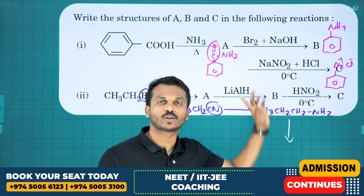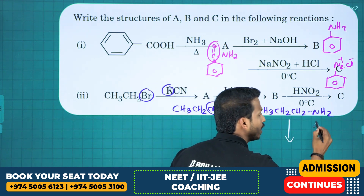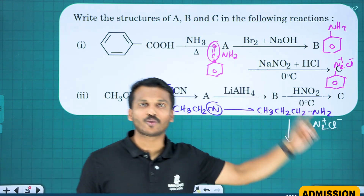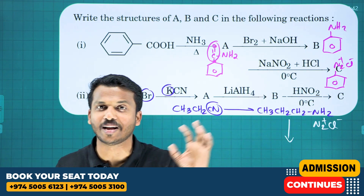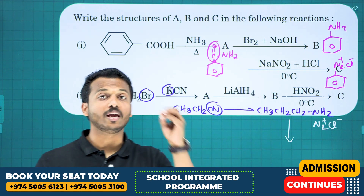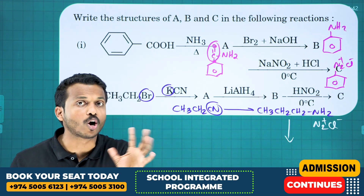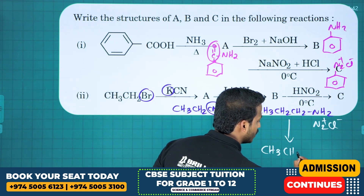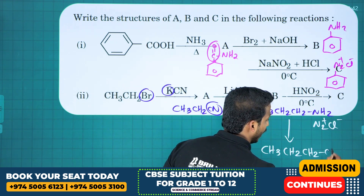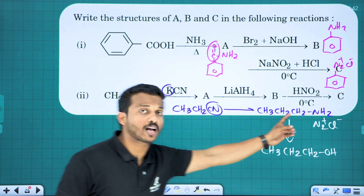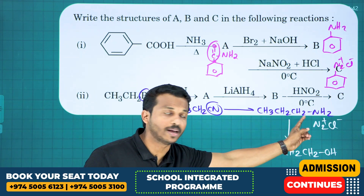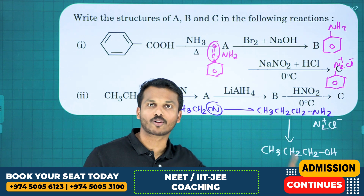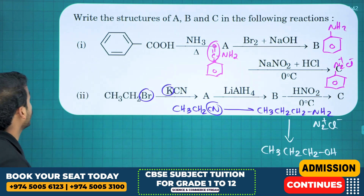Propanamine on diazotization: for aliphatic amines, the NH2 becomes N2Cl, but aliphatic diazonium salts are highly unstable. They immediately react with water to form alcohol, giving CH3CH2CH2OH — that is the aliphatic alcohol product.